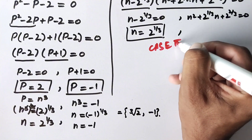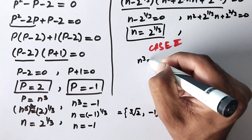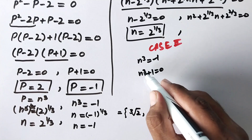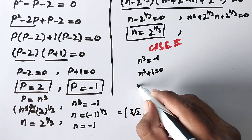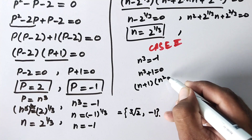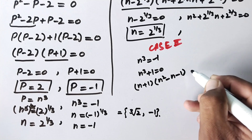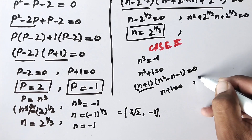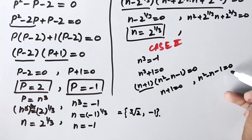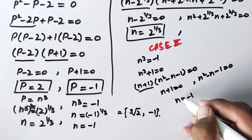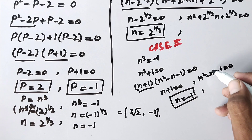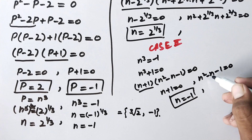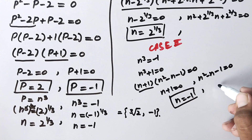In Case 2, when n cubed equals minus 1, we write n cubed plus 1 equals 0. Applying the sum of cubes formula gives (n plus 1)(n squared minus n plus 1) equals 0. This gives two factors: n plus 1 equals 0 and n squared minus n plus 1 equals 0. From the first factor n equals minus 1, and the quadratic will yield two more roots, giving three roots total for Case 2.